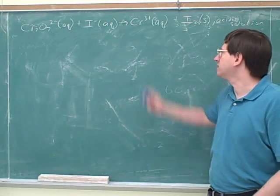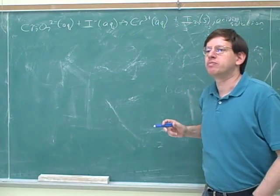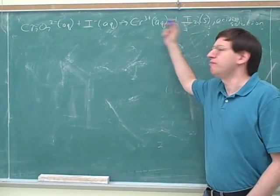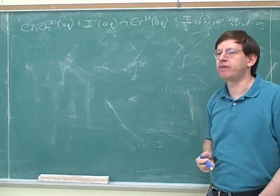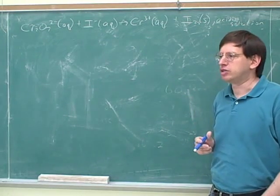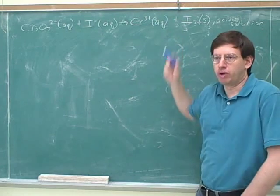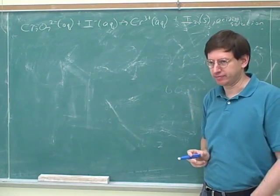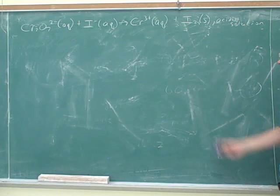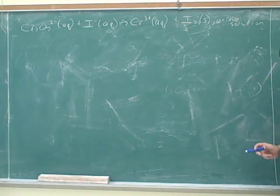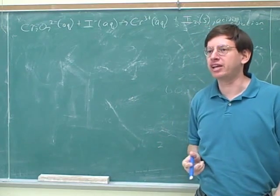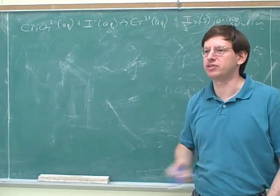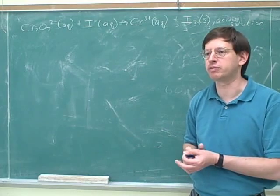The first thing that makes it more complicated is that it is an aqueous solution, which means that water may participate in the reaction. Since water is the solvent, water might participate, which means we might have to add water to one of the sides of the equation. Also notice that this is an acidic solution, which means that we might have to add protons to the reaction. Those are two complications that we didn't have for the previous example, so that's why this type of redox reaction is much more complicated.